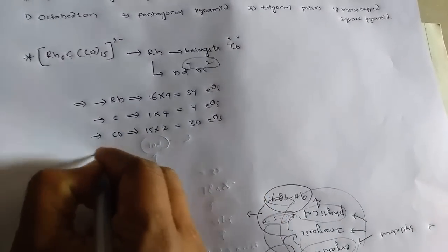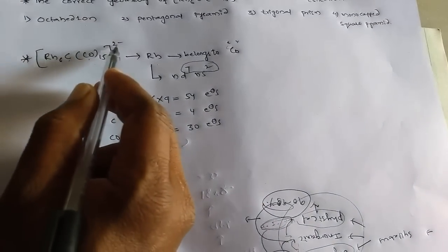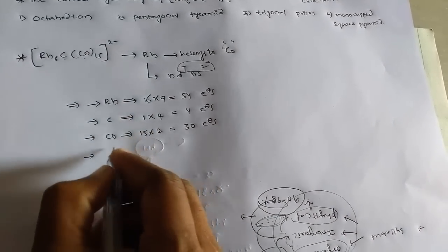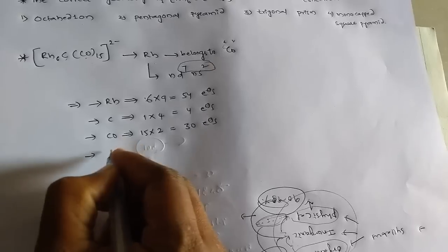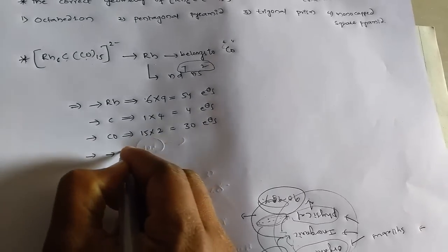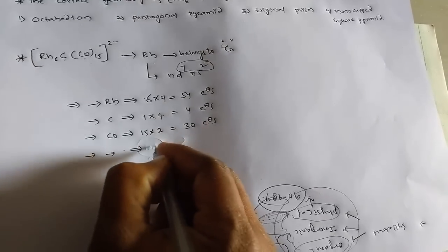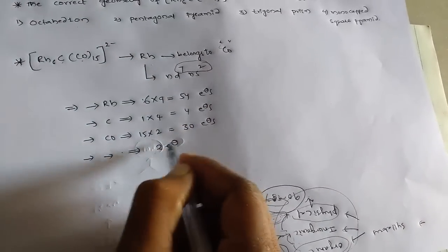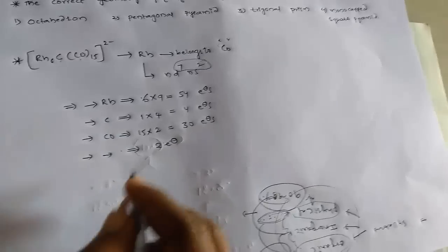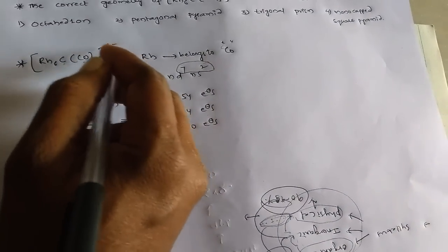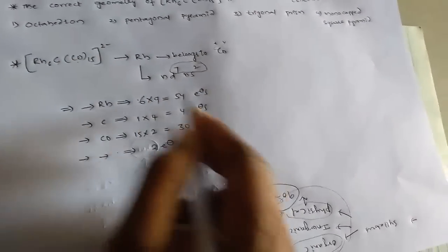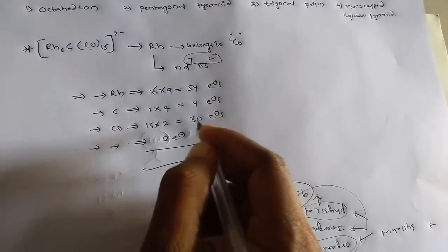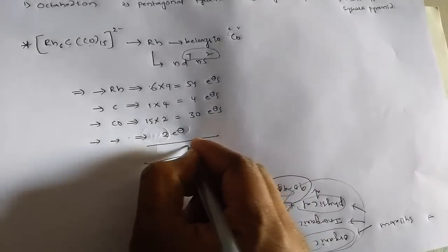Hence 15 times 2 equals 30 electrons. And then the total complex has minus 2 charge, so we need to contribute this 2 to the complex. Two valency electrons, two charges, so that's why we need to add these two electrons. If it's plus, then we should subtract two electrons from this total electron count.